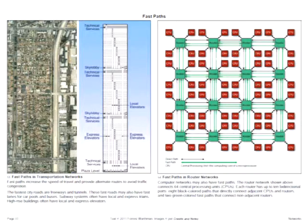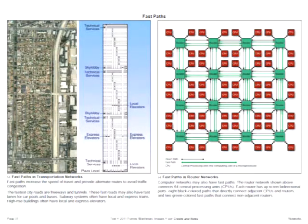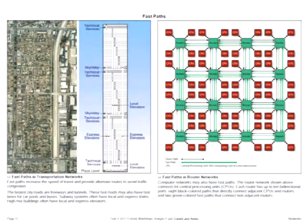Fast paths are common in cities: a freeway offers the opportunity to bypass many local road intersections, freeways have express lanes, there are subway express trains underground, and buildings have express elevators. Complex switches and routers on the right are connected not only to adjacent CPUs and routers, but some connections — particularly the green ones — can skip a hop and go to a more distant router to move packets faster.